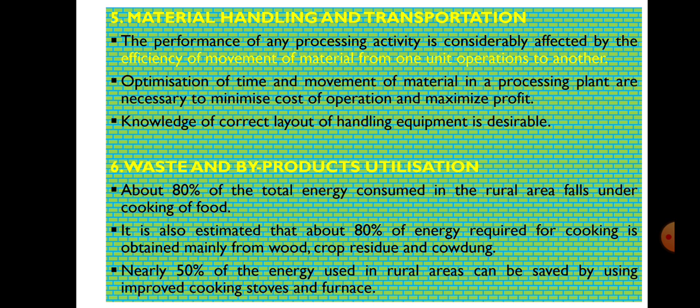The next class of unit operation is Material Handling and Transportation. The performance of any processing activity is considerably affected by the efficiency of movement of material from one unit operation to another. Therefore, material handling equipment like belt conveyor, bucket elevator, screw conveyor, and pneumatic conveyor play an important role, and all these machinery are called material handling equipment. Optimization of time and movement of material in a processing plant is necessary to minimize cost of operation and maximize profit. Knowledge of correct layout of handling equipment is desirable.